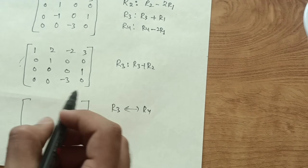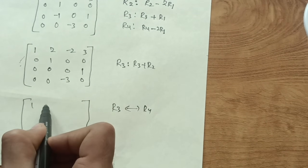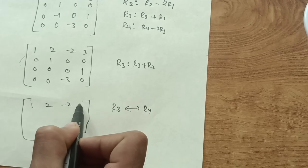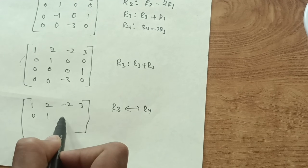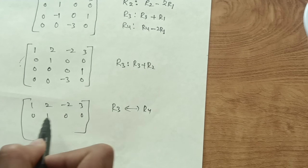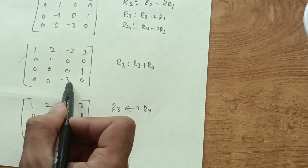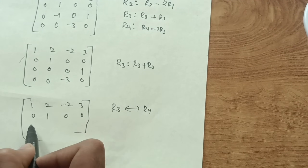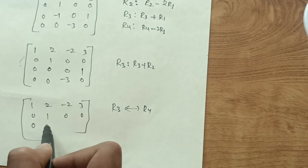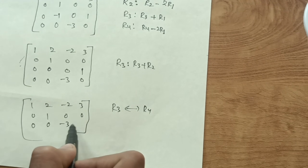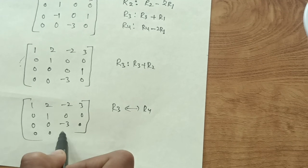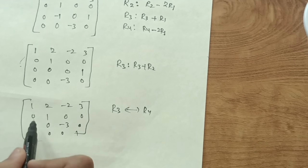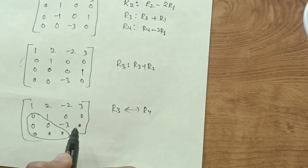After the row interchange, the matrix becomes: [1, 2, -2, 3], [0, 1, 0, 0], [0, 0, -3, 0], [0, 0, 0, 1]. All entries below the diagonal are now zero.